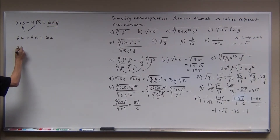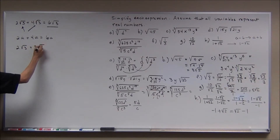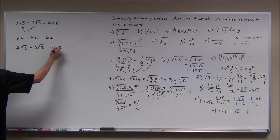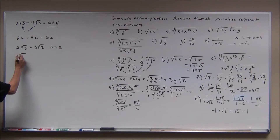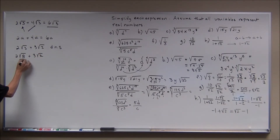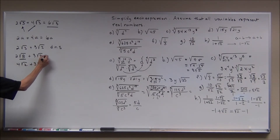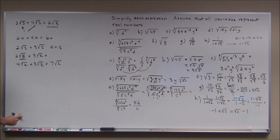On the other hand, two square roots of three plus three square roots of two — even though they're both square roots, they have different radicands and cannot be combined. But be careful: if you have two square roots of eight plus three square roots of two, they look like they won't simplify, but the square root of eight simplifies. Eight is four times two, so this becomes four square roots of two plus three square roots of two, which is seven square roots of two. Make sure radicals are simplified first before trying to combine them.